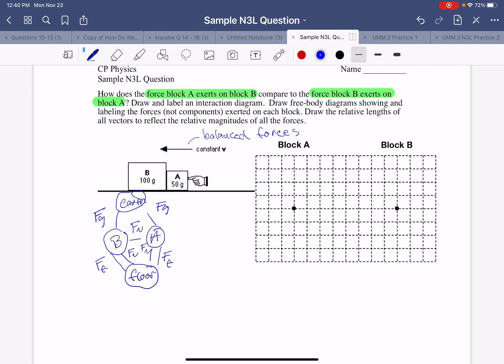So block B has a gravitational force of the earth on B pulling it down. And it isn't going towards the center of the earth because of the normal force of the floor on B. Those are balanced because there's no change in motion vertically. Then block A is to the right of block B. So block A is pushing block B to the left. So that's the normal force of A on B.